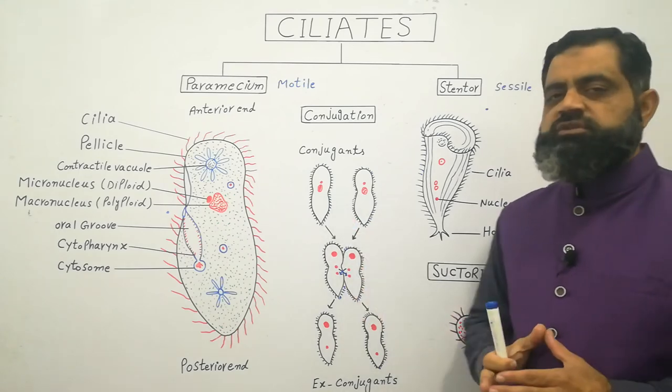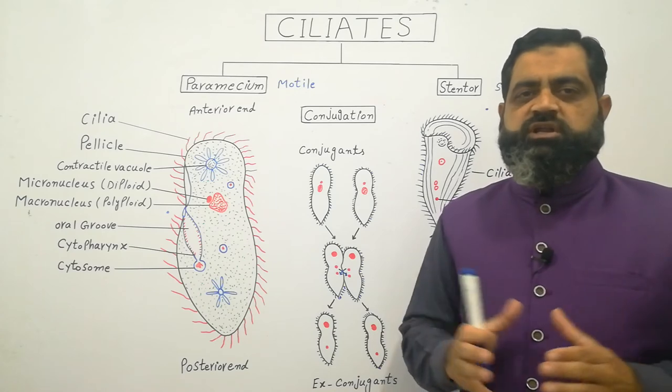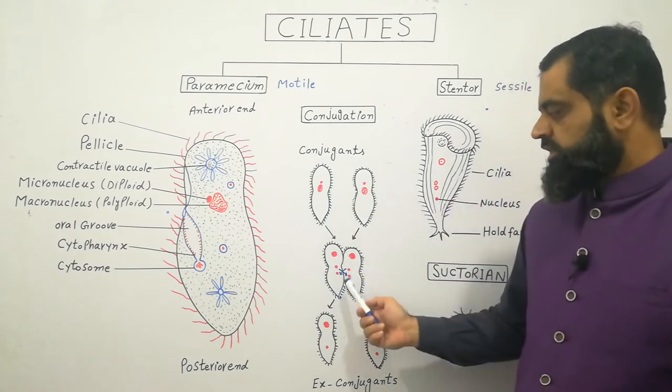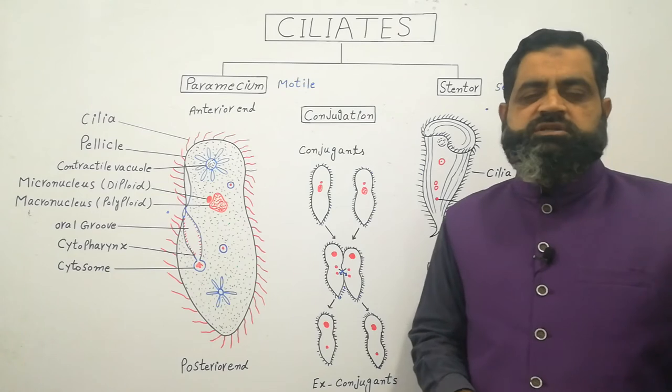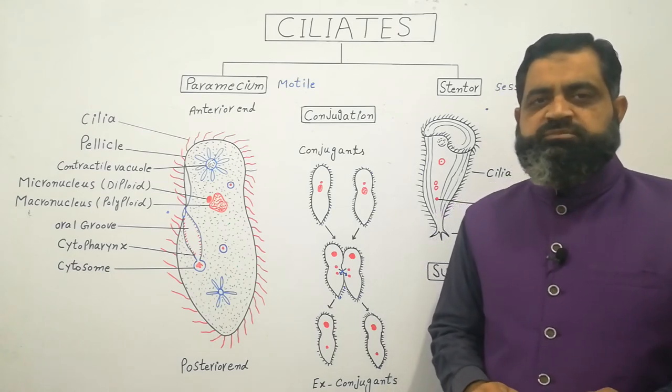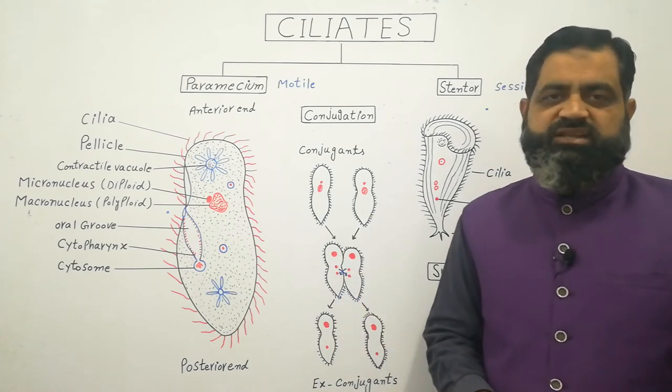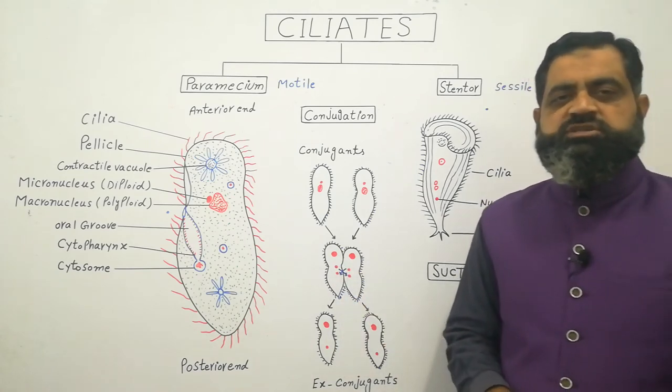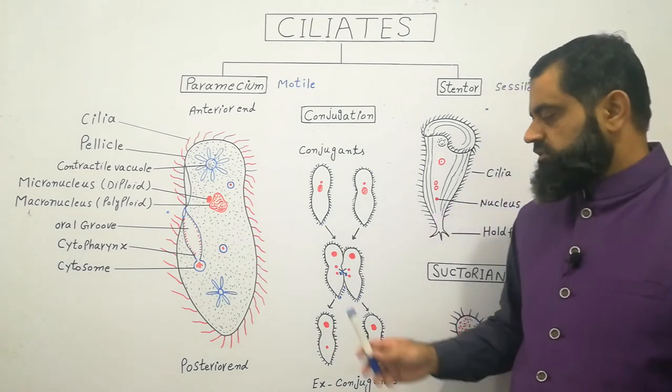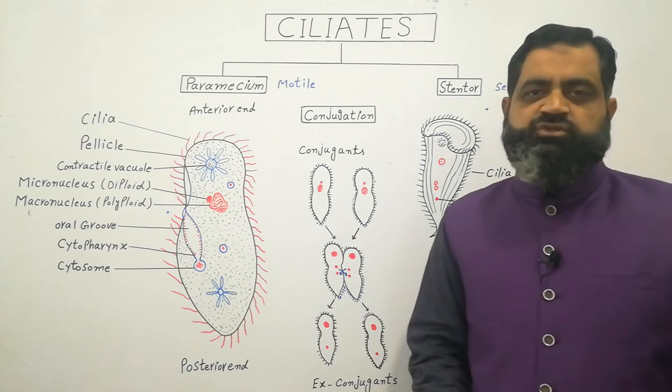They are attached with each other with the help of their pellicle. A sticky substance is released from their body which helps them to fuse with each other. After fusion macronucleus does not take part in conjugation while micronuclei divide meiotically and they exchange their genetic material between the cells. After conjugation which takes place for many hours these paramecium get separated and these are known as ex-conjugants.